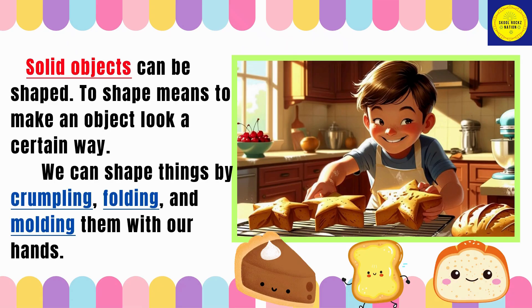Solid objects can be shaped. To shape means to make an object look a certain way. We can shape things by crumpling, folding, and molding them with our hands.